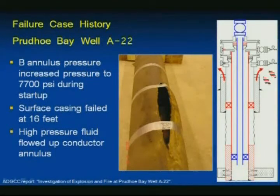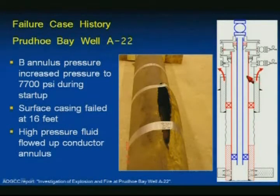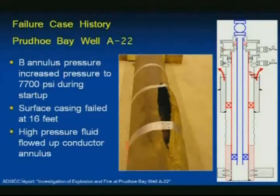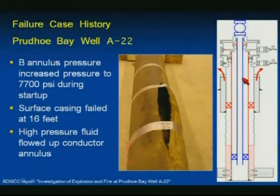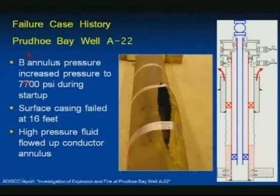Let's look at a failure case history. First, some nomenclature: the tubing string, production casing, surface casing, and conductor pipe. The annular space between tubing and production casing is the A annulus; between production and surface casing is the B annulus — that's the standard nomenclature most folks use. During well startup, the B annulus pressure on this well increased to 7,700 PSI. On the left is a picture of the failed surface casing — this split is where the casing failed. Classic burst: you see thinning along the edges, and the split is along the axis of the pipe.